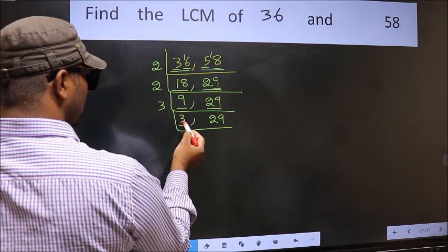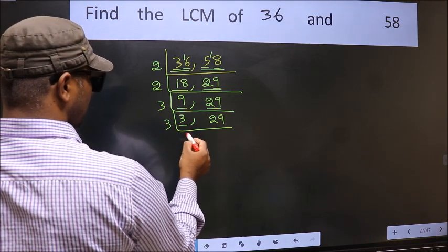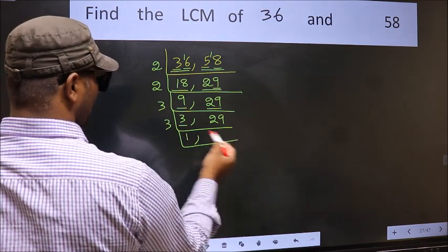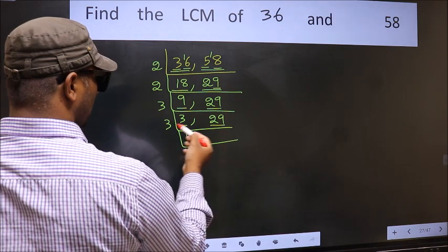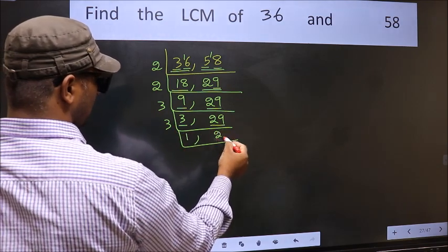Now here we have 3, 3 is a prime number, so 3 wants 3. The other number 29, not divisible by 3, so we write it down as it is.